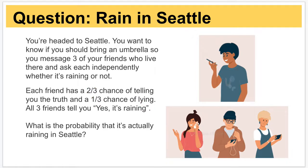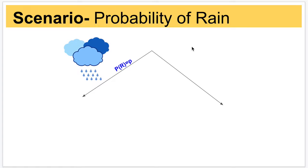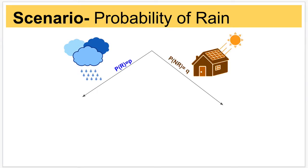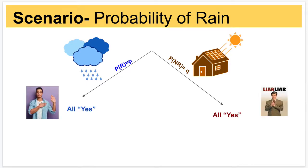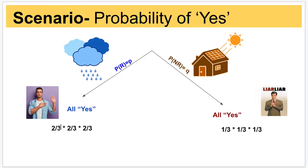Let's represent the scenario. We have the probability of it raining, and the probability of it not raining. The probability of raining is P, and the probability of not raining is Q, or 1 minus P. All three friends said yes, but there is a probability they could all be telling the truth or all be lying. The probability of all of them telling the truth is two-thirds cubed, which is 8 over 27. The probability that they're all lying is one-third cubed, which is 1 over 27.